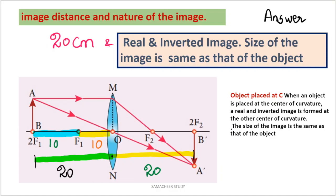We have completed the first part: image distance is 20 centimeters. Now for the nature of the image. The convex lens has focal length 10 centimeters. The object is placed at 20 centimeters, which is exactly at 2f — twice the focal length. So the object is placed exactly at the center of curvature, at 2f.